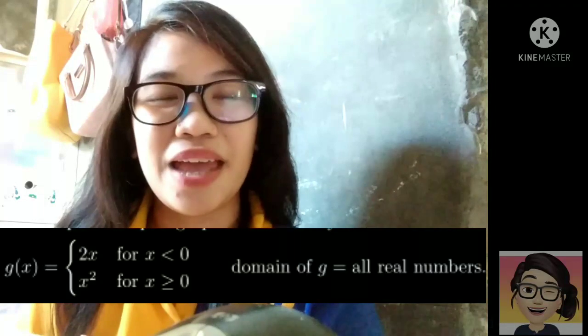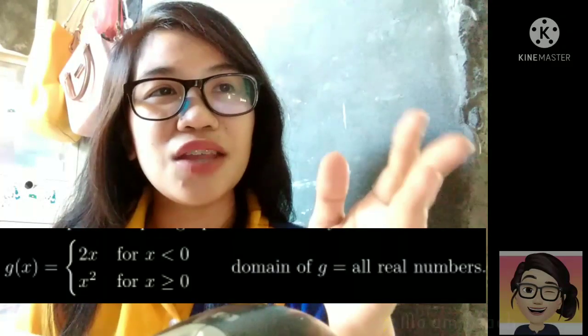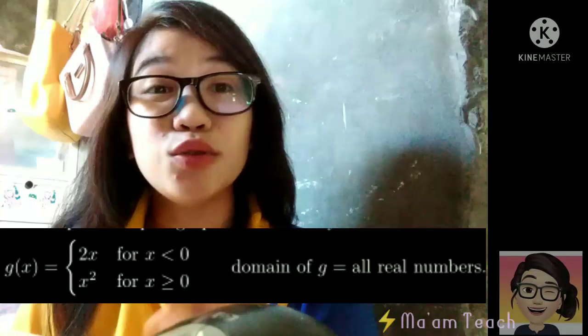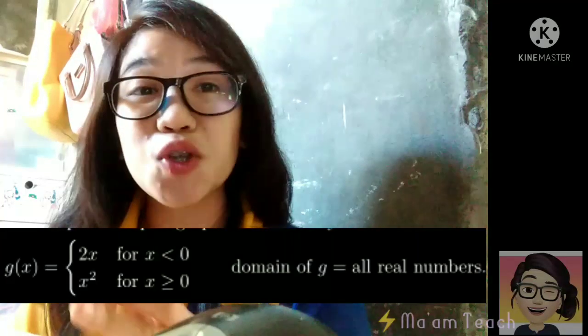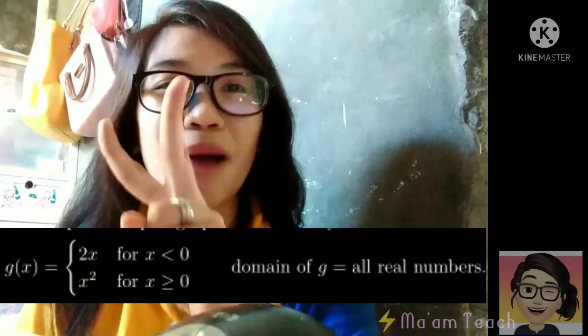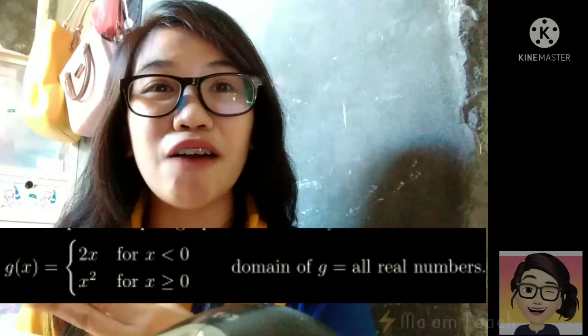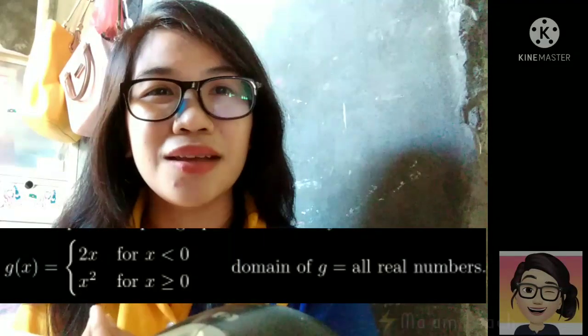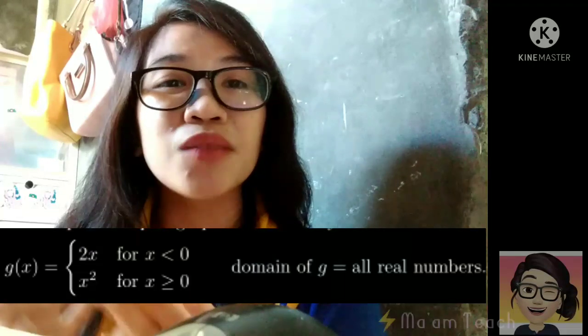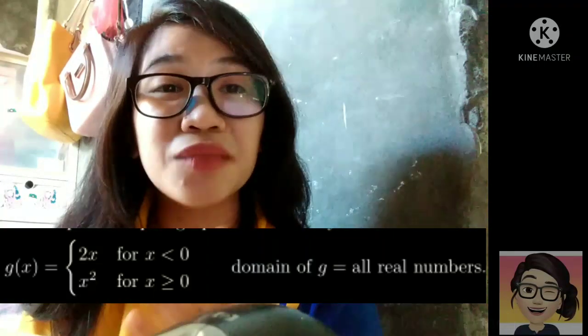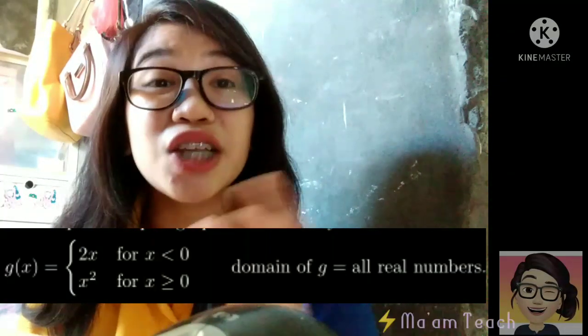G of x. G of x in this equation is equal to 2x and it can also be equal to x squared. Dalawa. Dalawa yung function niya or yung rule niya. Yung g of x, pwede siya maging equal sa 2x at pwede rin mag-equal siya sa x squared. Take note also, class, the condition.